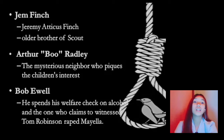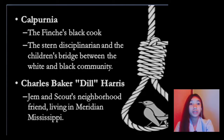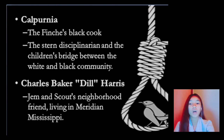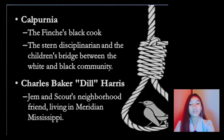The sixth character is Calpurnia, the Finch family's Black cook. She is the trained disciplinarian in the children's lives and a bridge between the white and black community. Calpurnia is an African-American housekeeper who grew up at Finch's Landing and moved with Atticus to Maycomb. She is the closest thing to a mother that Scout and Jem have. She is one of the few Black people in town who can read and write, and she teaches Scout to write as well.